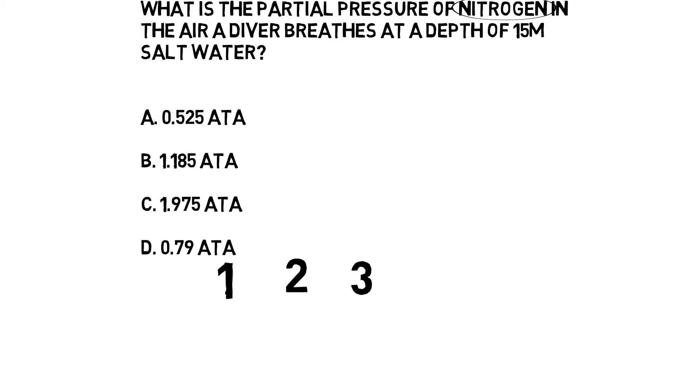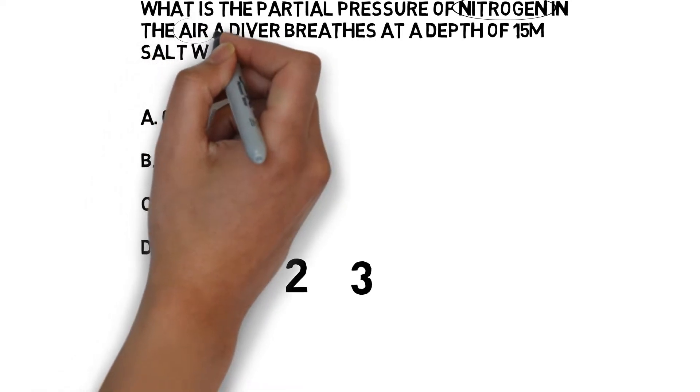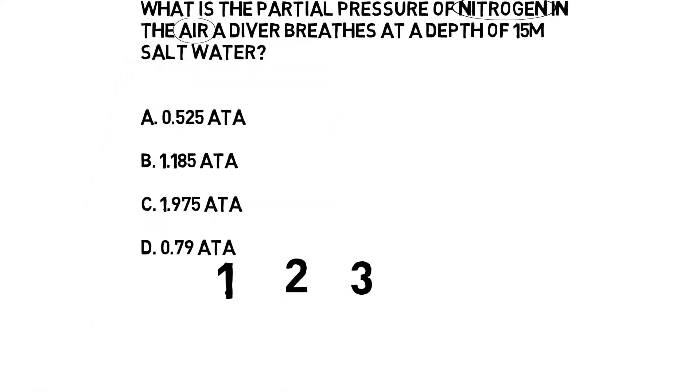The first thing we need to focus on is the type of gas the question is asking about. It's about nitrogen. As far as all PADI questions are concerned, you can assume that air is made up of 21% oxygen and 79% nitrogen. So nitrogen in air, we're going to write down the 79% as a decimal.